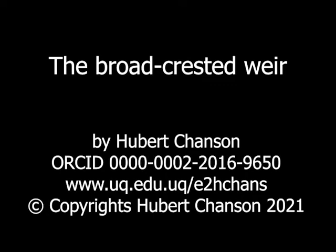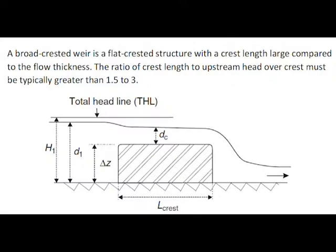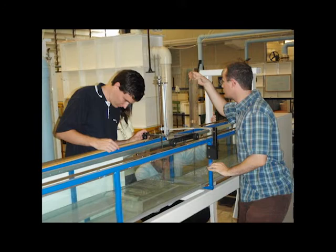A broad-crested weir is a flat-crested structure installed in an open channel with a crest length large compared to the flow thickness.